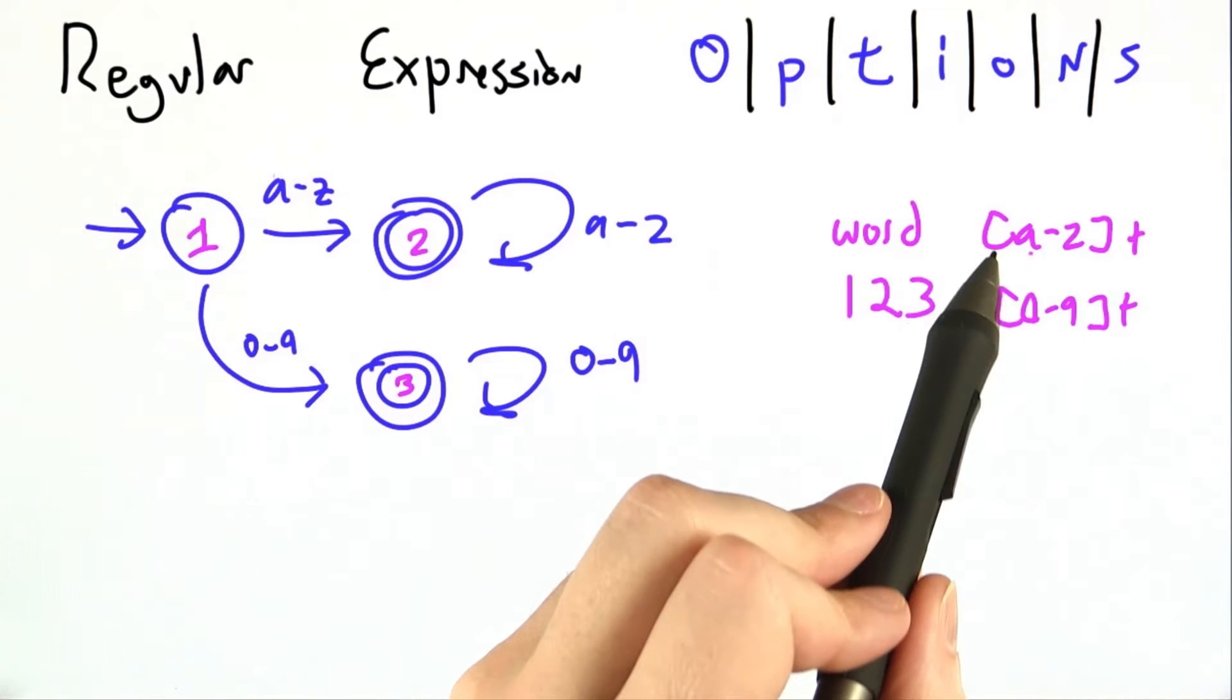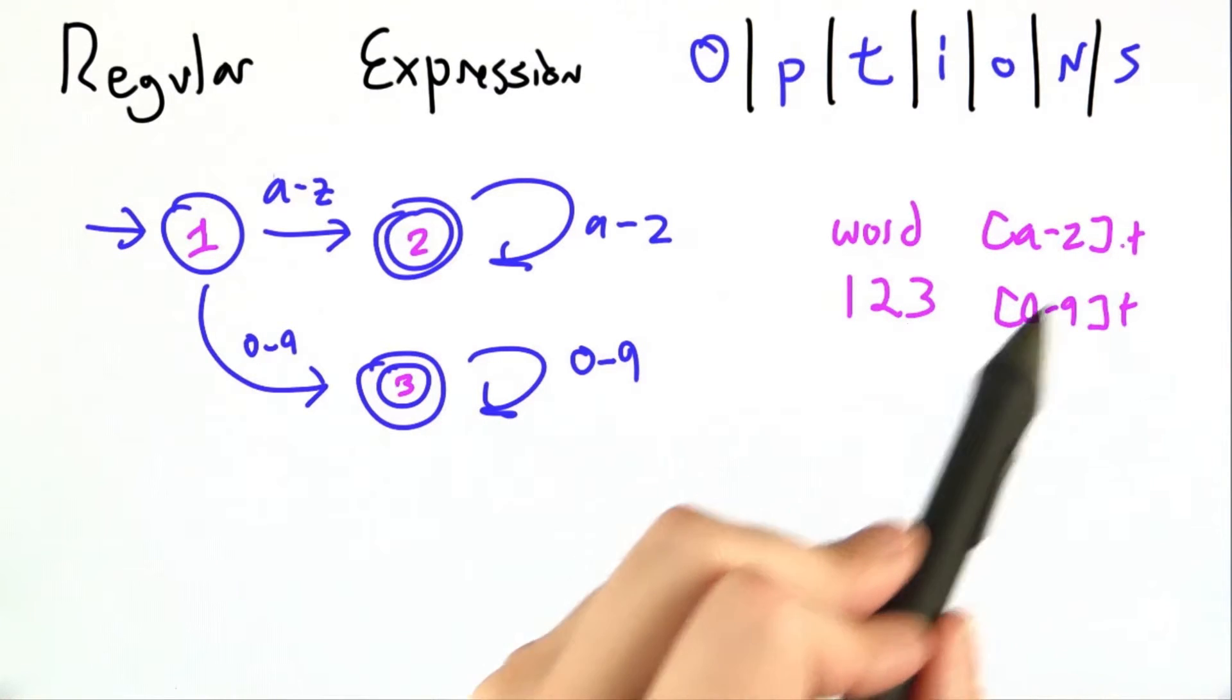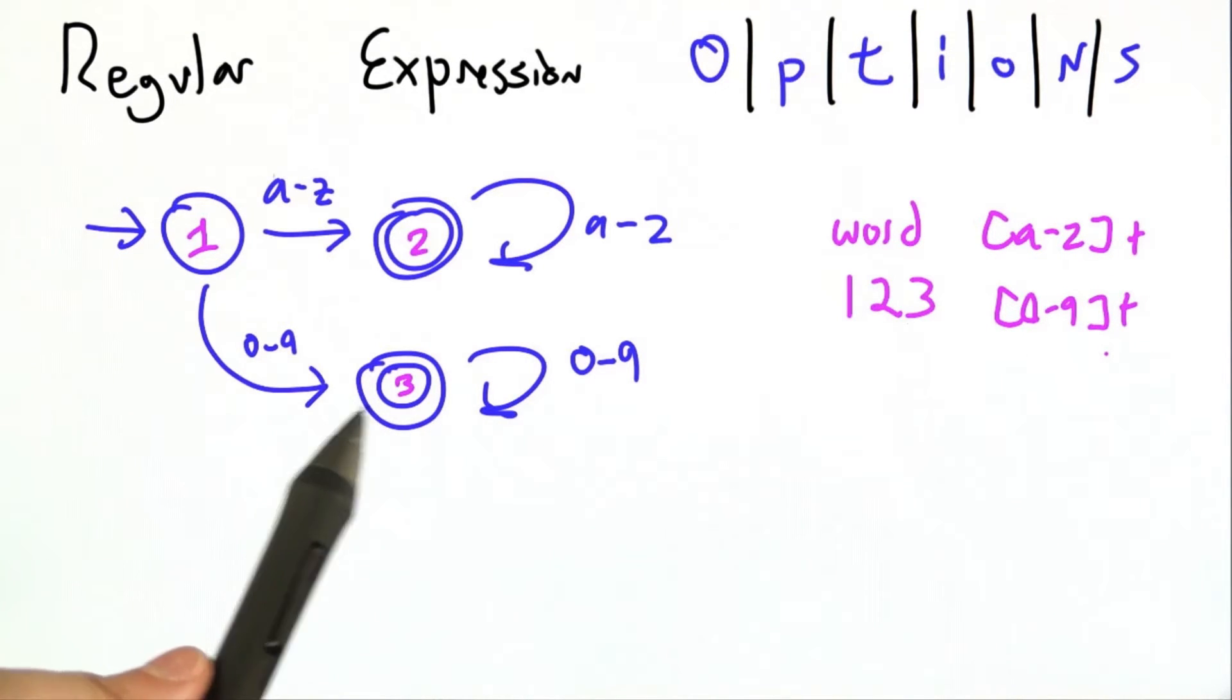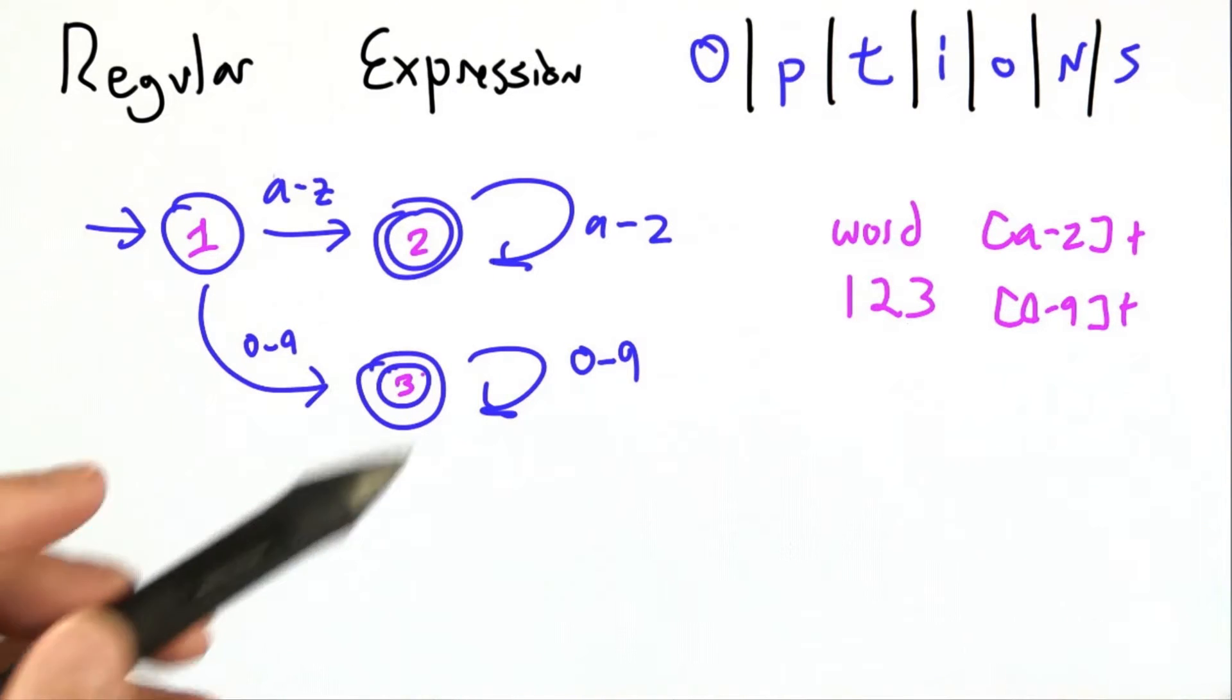In fact, there's a sense in which it accepts either A through Z plus or 0 through 9 plus. Note it's two accepting states, such power.